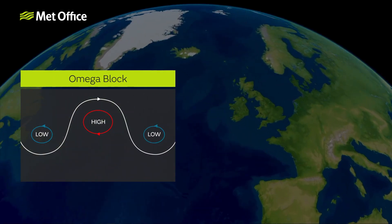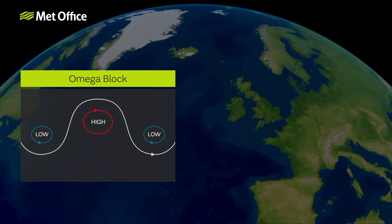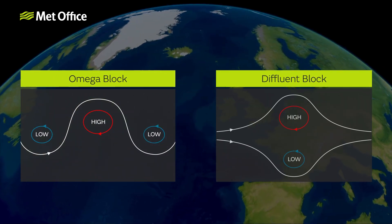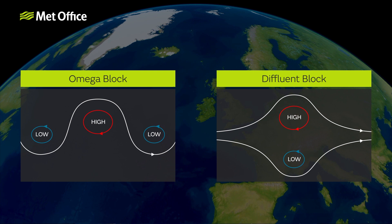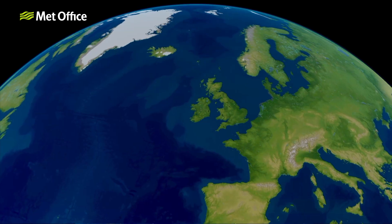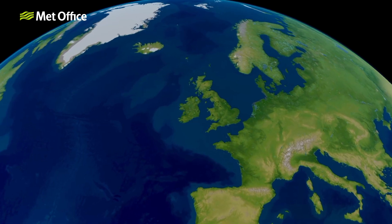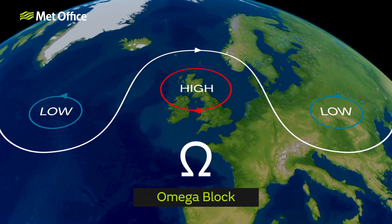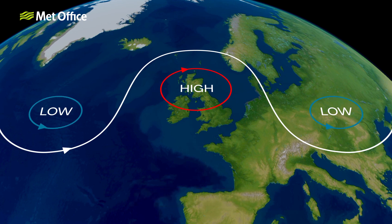There are two main types of blocks: an omega block and a diffluent block, which are most common in spring. Omega blocks are named due to the pattern they form, which resembles the uppercase Greek letter Omega. An area of high pressure will be sandwiched in between two lows, one to the east and one to the west.